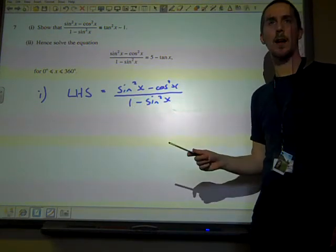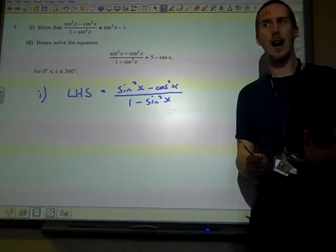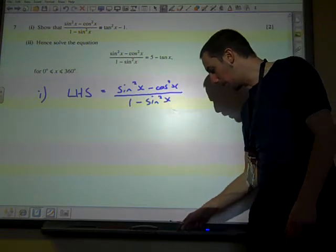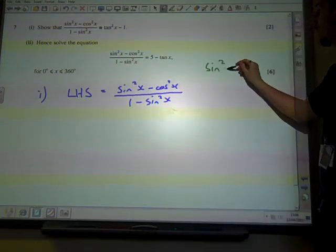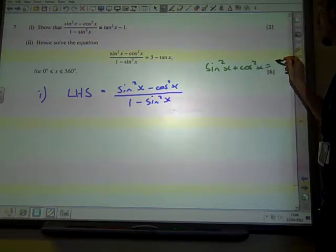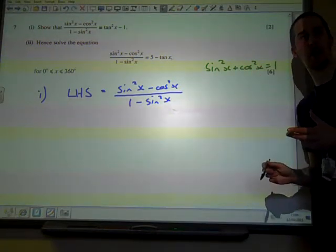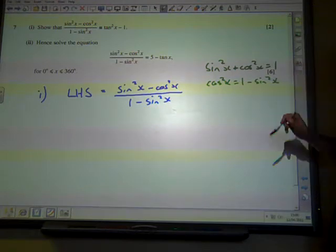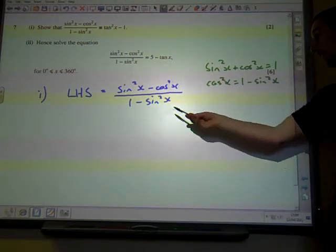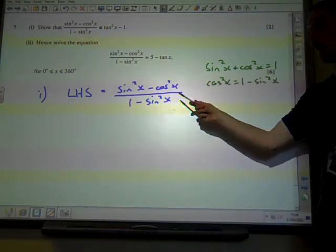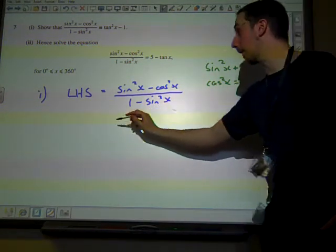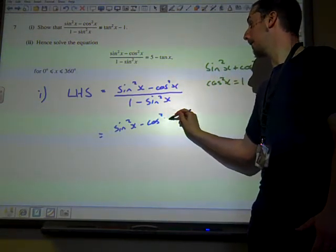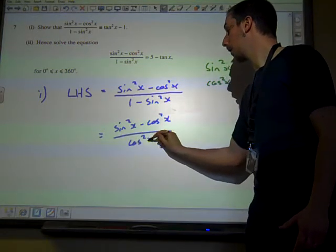Sin squared x minus cos squared x, well there's not an awful lot I can do with that. I know about sin squared x plus cos squared x. 1 minus sin squared x, well I do know that if I've got this identity, if I know that that's true, then I can rearrange that however I want. So I could say that cos squared x is always 1 minus sin squared x. So when I see this 1 minus sin squared x here, I know that that's the same as cos squared x. So let's work with that. That means that that bottom line is the same as cos squared x.